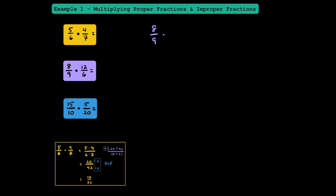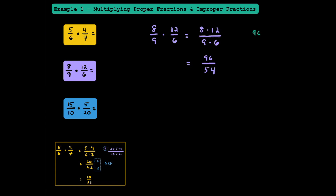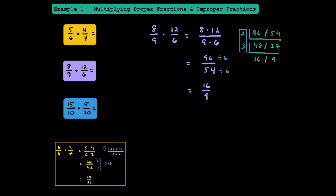In this next example, we'll multiply 8 ninths by 12 sixths. We'll rewrite this as 8 times 12 in the numerator and 9 times 6 in the denominator. Multiplying 8 times 12 gives us 96, and 9 times 6 gives us 54. Since 96 and 54 are both even, let's find their GCF. Dividing by 2 gives 48 and 27. Using divisibility rules for 3, both 48 and 27 are divisible by 3, giving us 16 and 9. So the GCF is 6. After simplifying, our final fraction is 16 ninths, which can also be written as the mixed number 1 and 7 ninths.